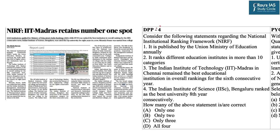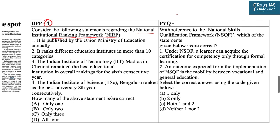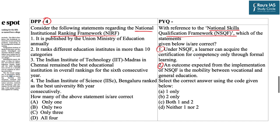DPP question number four is in relation to the recently released National Institutional Ranking Framework. The government has ranked various universities and colleges on the basis of multiple parameters. Previous year analysis shows questions from the skills and education themes are very important in prelims — for example, a question was asked on the National Skills Qualification Framework. Read this question and try to attempt it.